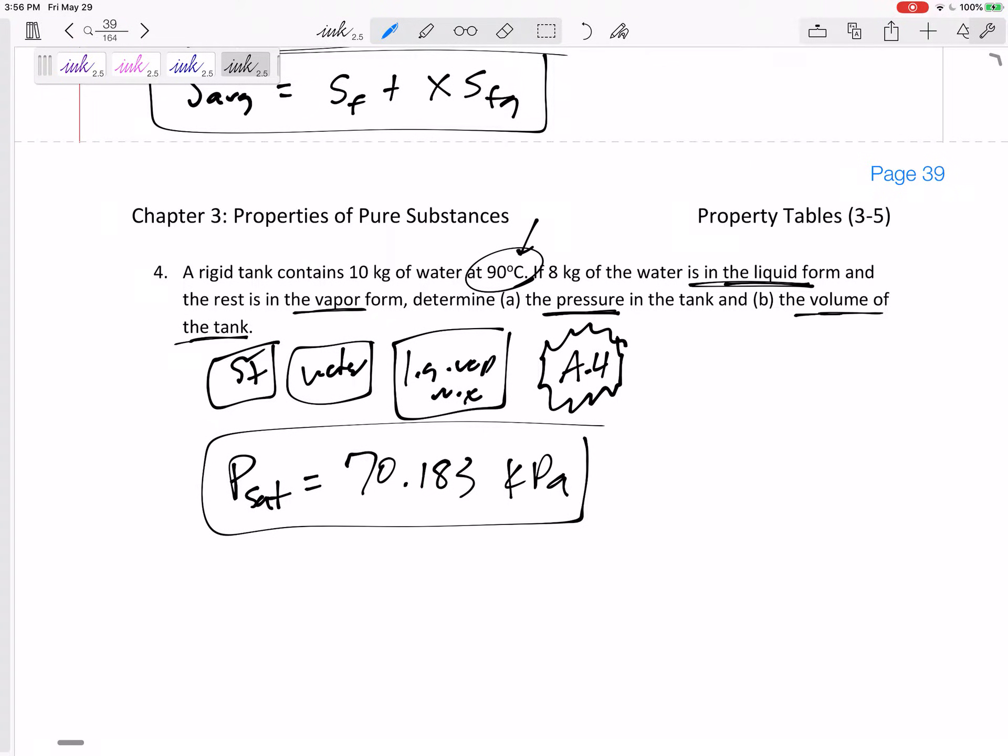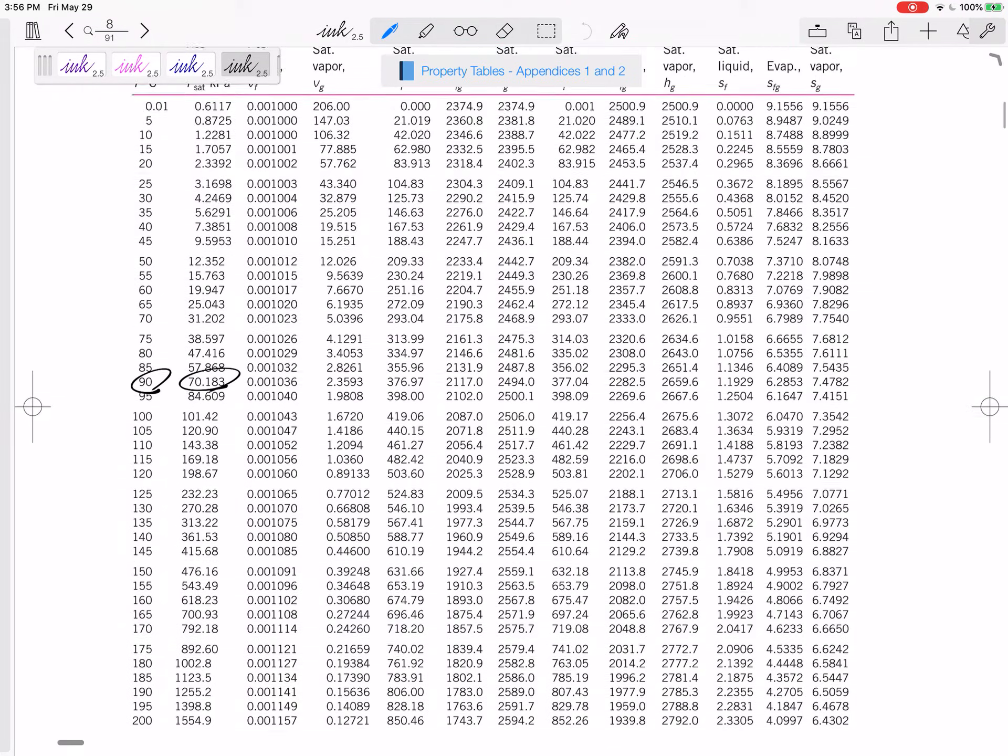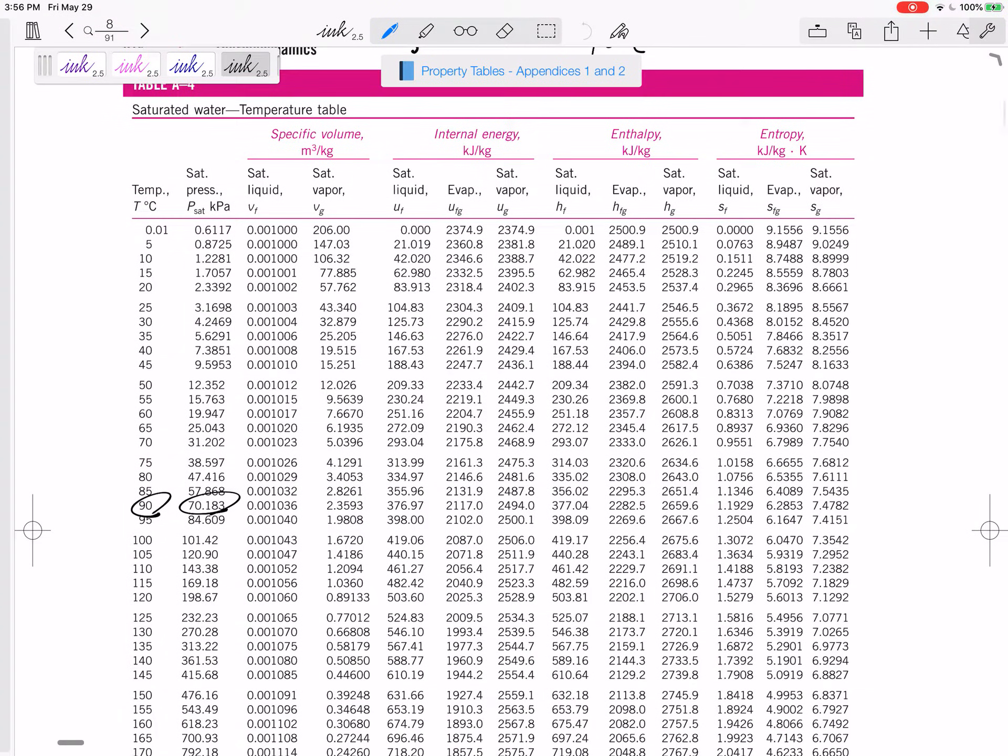Then the volume of the tank. Well, the property table is not going to give me the volume of the tank, but I bet you the property table could give me the specific volume of the tank. The property table is not going to give me the volume, but it can give me the specific volume, and then with the mass, I can figure everything else out.